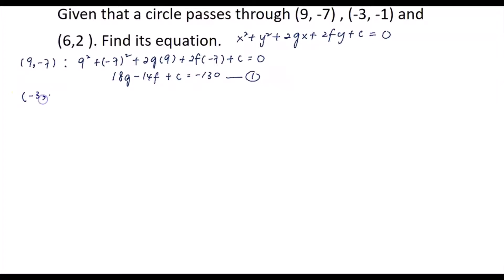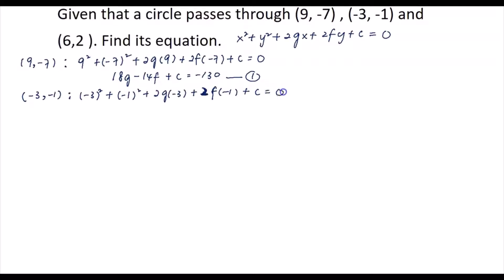For Equation 2, substitute the second point (-3, -1) into the general equation. With x = -3 and y = -1: 2g(-3) + 2f(-1) + c = 0. After simplifying, you get -6g - 2f + c = -10. We name this Equation 2.